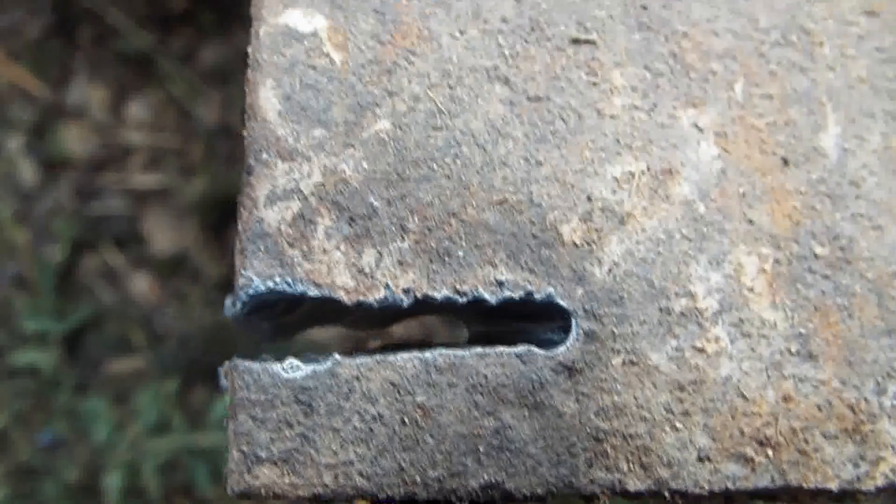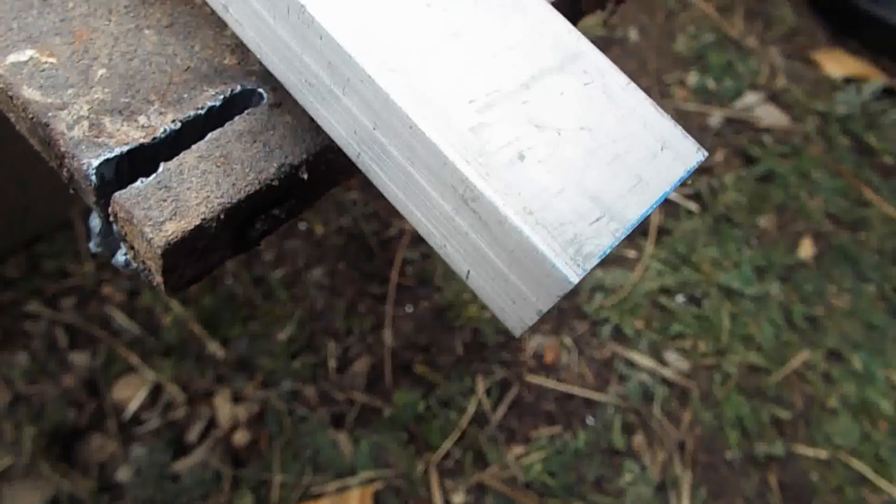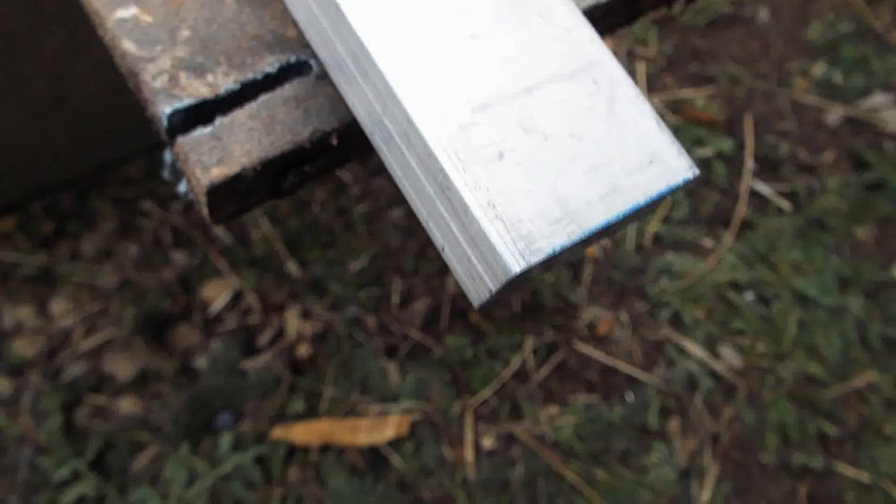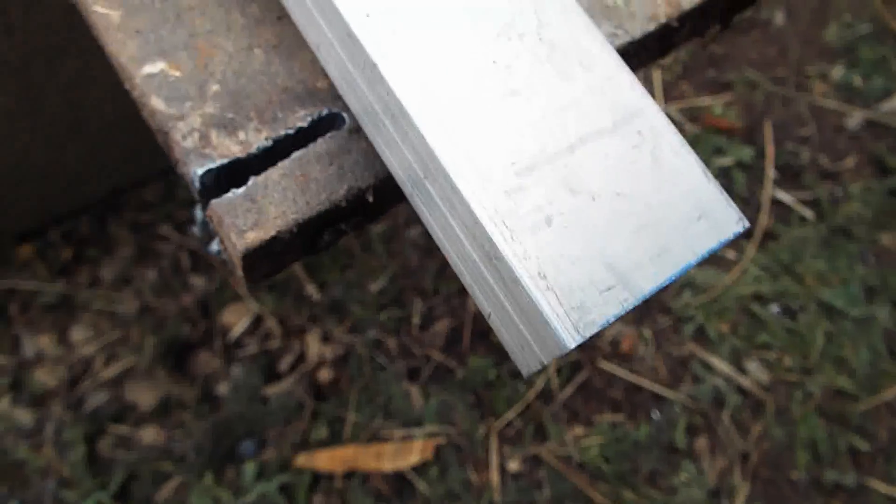I'm going to try some aluminum next. So, this is a half inch piece of bar stock aluminum I have. It's maybe an inch and a quarter wide. I normally cut this stuff on the table saw, but I just want to see how well it cuts with the plasma cutter.